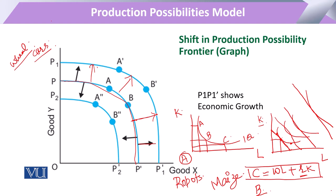Our output increases from this production possibility frontier to the next. Similarly, if we come backward from a higher level, the level of production decreases because the amount of labor that was available at one point has decreased to a lower point, and in that way the shifting that occurs will be the inward shifting.